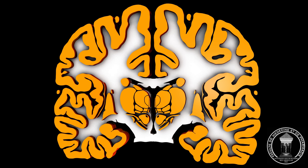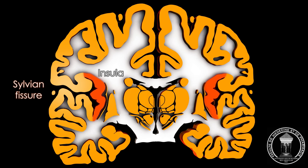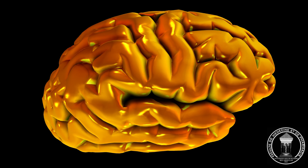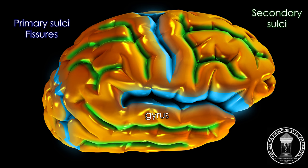There is also a fifth lobe, not visible on the surface — the lobe of the insula, found by opening the sylvian fissure. In each lobe, there are less deep sulci delimiting ridges on the cerebral cortex surface. Each of these ridges is called a gyrus.